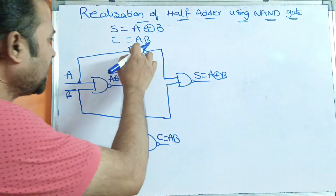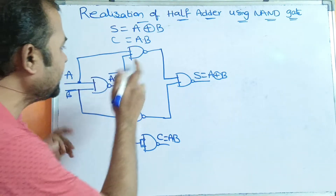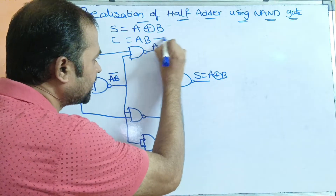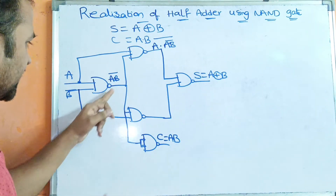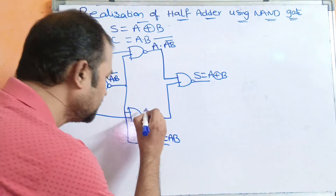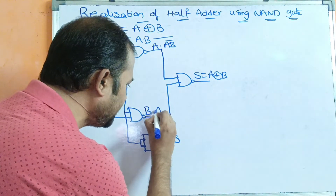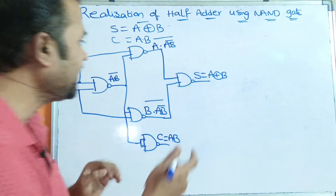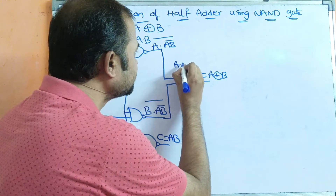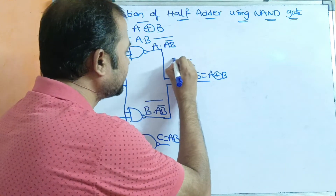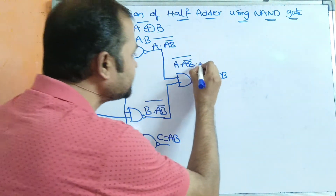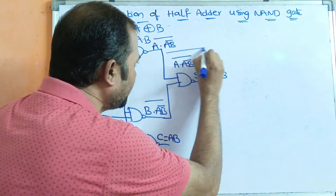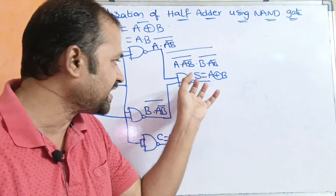Now let us evaluate the sum. The second NAND gate has one input from A and another from (AB)̄, so its output is (A·(AB)̄)̄. The third NAND gate has one input from B and another from (AB)̄, so its output is (B·(AB)̄)̄. The fourth NAND gate receives inputs from these two NAND gates, giving us the expression in the form of (AB)̄, where A represents (A·(AB)̄)̄ and B represents (B·(AB)̄)̄.